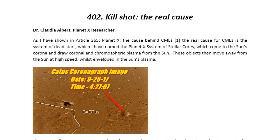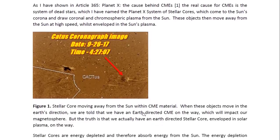As I have shown in article 365 entitled 'Planet X: The Cause Behind CMEs,' the real cause for CMEs is the system of dead stars which I have named the Planet X system of stellar cores, which come to the sun's corona and draw coronal and chromospheric plasma from the sun. These objects then move away from the sun at high speed whilst enveloped in the sun's plasma. You can see one of these objects in this image moving away from the sun within CME material.